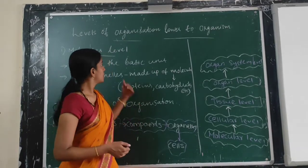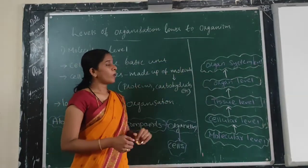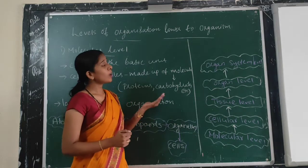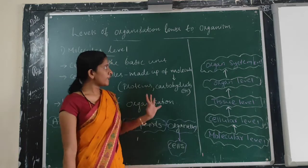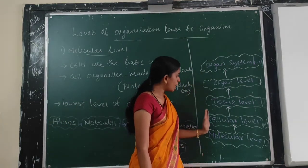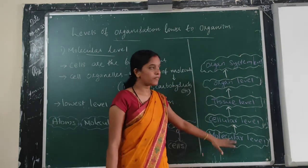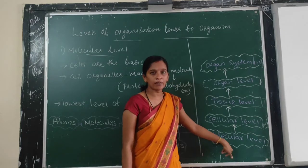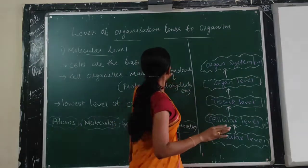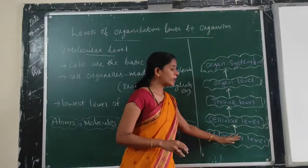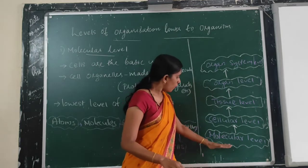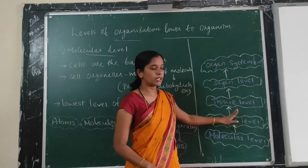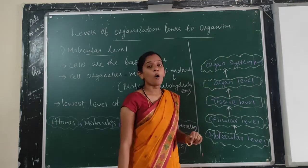Now we can discuss the levels of organization lower to organism. The basic starting level is molecular level, then cellular level, tissue level, organ level, and finally organ system level. Molecules combine to form cells, various tissues combine to form an organ, and various organs combine to form an organ system.